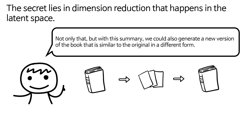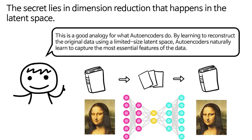Think of it like summarizing a 200-page book into a three-page summary. The original book has a lot of information, but the summary only keeps the key points. Through this process, only the most important features remain. With this summary, we could also generate a new version of the book that is similar to the original, in a different form. This is a good analogy for what autoencoders do. By learning to reconstruct the original data using a limited-size latent space, autoencoders naturally learn to capture the most essential features of the data.